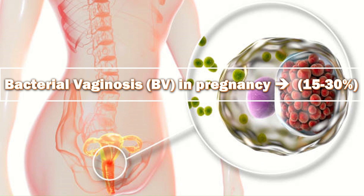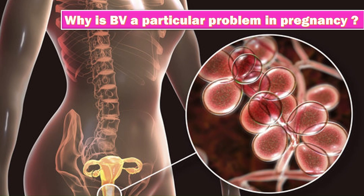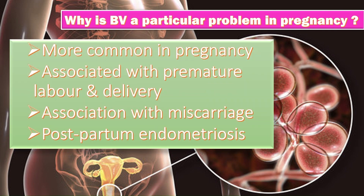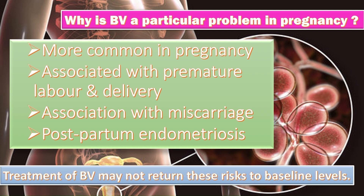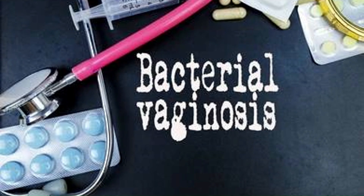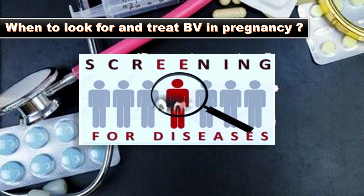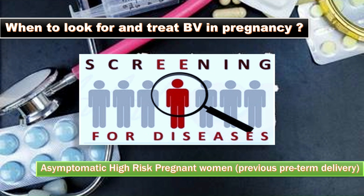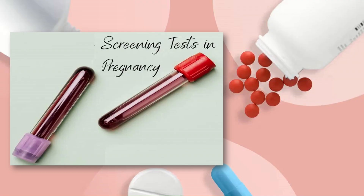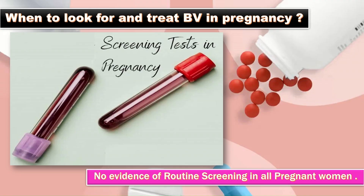Bacterial vaginosis in pregnancy occurs in 15 to 30 percent of cases. It is more common in pregnancy than in non-pregnant populations. It is associated with premature labor and delivery, has a controversial association with miscarriage, and causes postpartum endometritis. However, treatment may not return these risks to baseline levels. In asymptomatic high-risk pregnant women with a previous history of preterm delivery, screening may be considered. There is no evidence for routine screening in all expectant mothers.